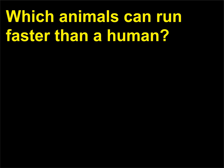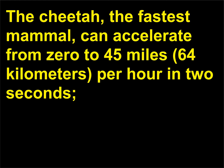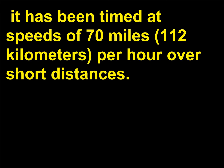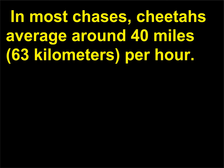Which animals can run faster than a human? The cheetah, the fastest mammal, can accelerate from 0 to 45 miles, 64 kilometers, per hour in 2 seconds. It has been timed at speeds of 70 miles, 112 kilometers, per hour over short distances. In most chases, cheetahs average around 40 miles, 63 kilometers, per hour.